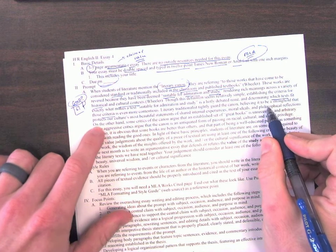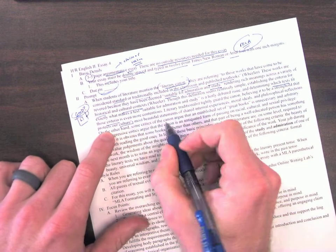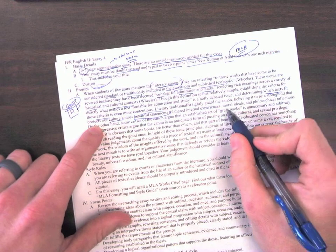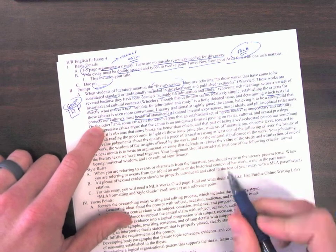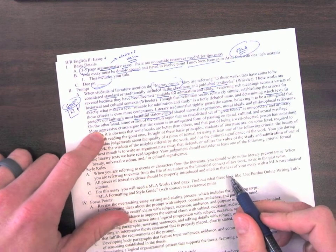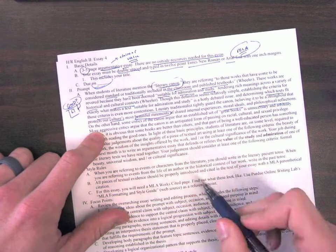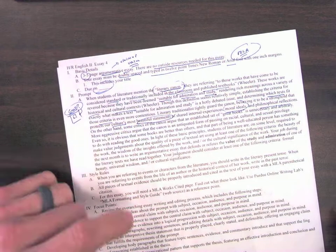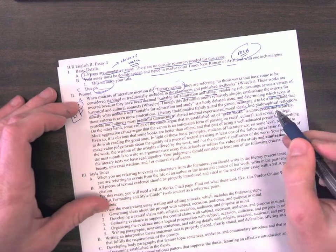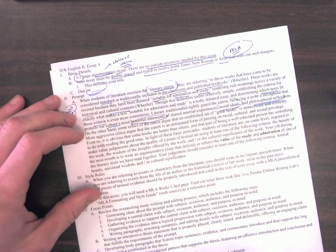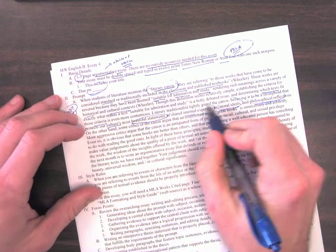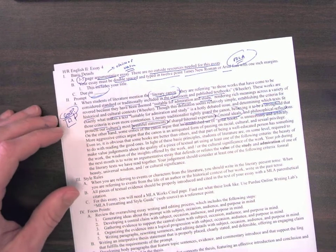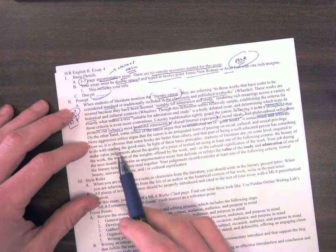So traditionalists tightly guard the canon, believing it to be a stronghold that protects a culture's and our culture's most beautiful statements of shared internal experiences, moral ideas, and philosophical reflections. So think of a book like The Inferno. It articulates some of the moral ideals central to Western culture, some of the philosophical reflections about ethics and Christian theology, and the internal experience of an individual going through the process of attempting to know God and himself.